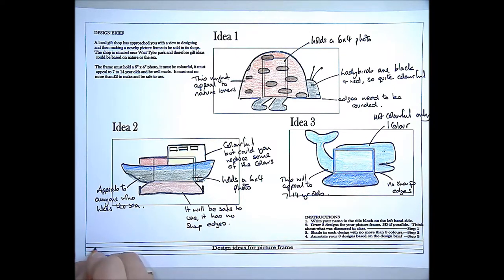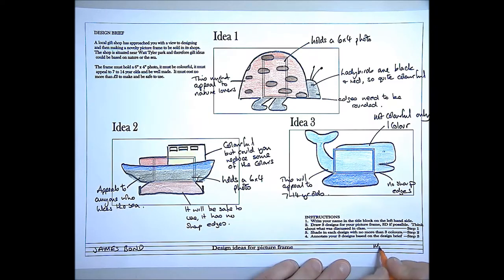Last bit, fill in the title block. So you put your name at one end, in block capitals. And then you put the name of the teacher at the other end. Once you've done that, you've got three designs which are all perfectly annotated.